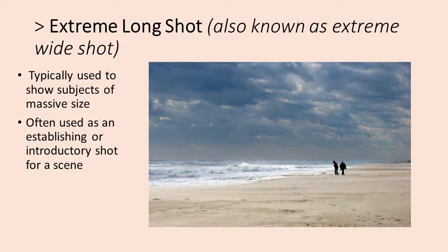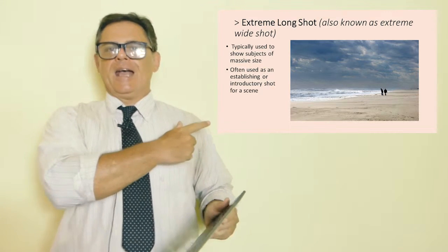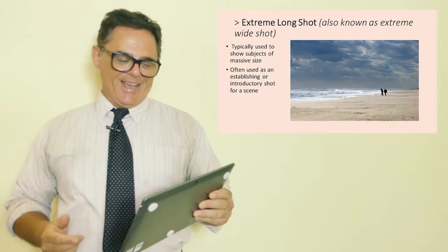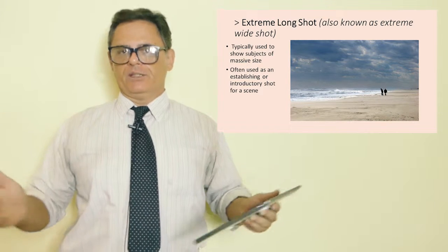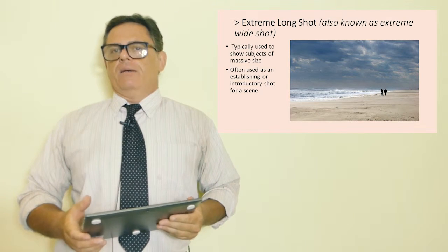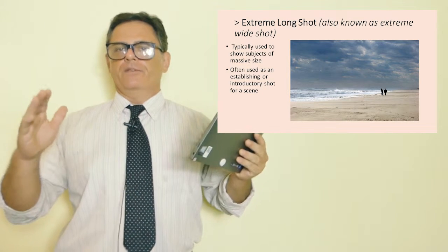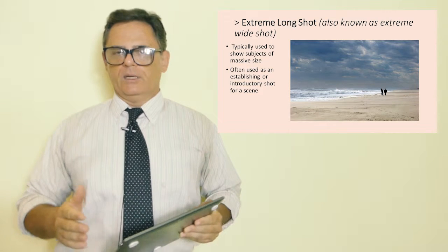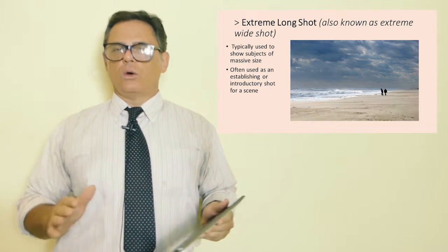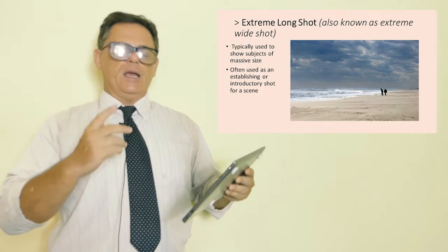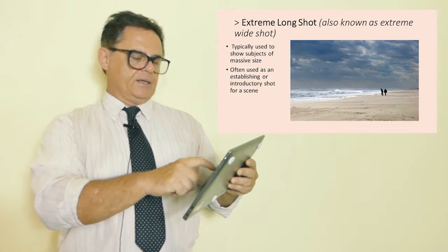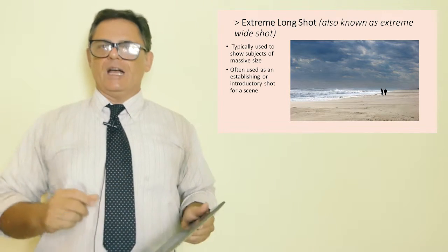The subject size in the frame. The first shot we'll look at is called the extreme long shot. It's also known as the extreme wide shot. The extreme long shot, as you can hopefully see here, is typically used to show subjects or environments of a massive size. Very often, it's the environment, the geographical orientation or location of a scene.